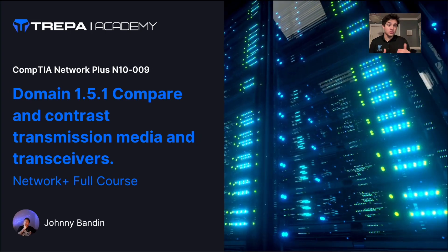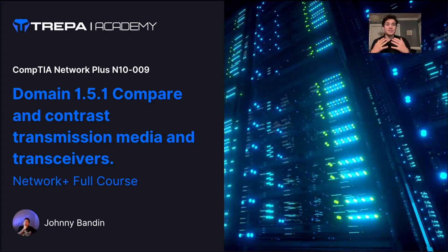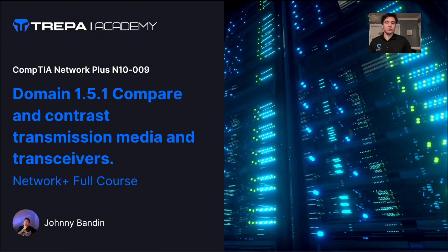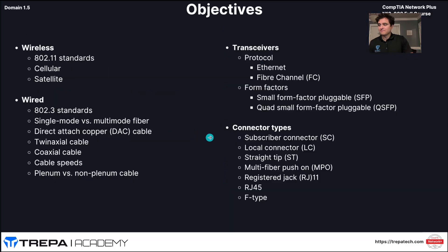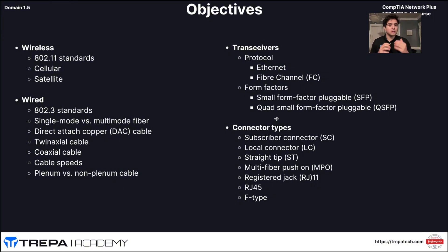There's going to be a section in Domain 1.5.2 going over connector types, and there's really no way to make that exciting. So let's get started. You can see our objectives here. We're going to go over wireless and wired standards first — the basic 802.11, cellular, and satellite standards. Then we'll get into Ethernet and the different types of Ethernet cabling: fiber, regular coax, unshielded and shielded twisted pair. Then we'll cover transceivers and the different connector types on fiber and copper 802.3 standards.